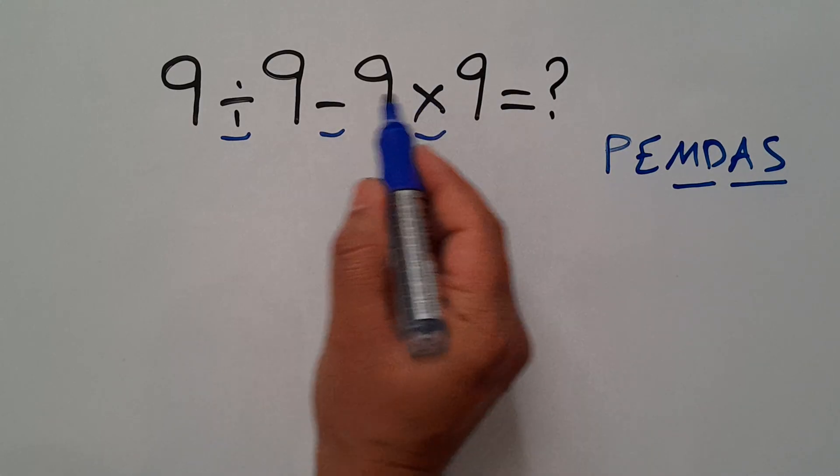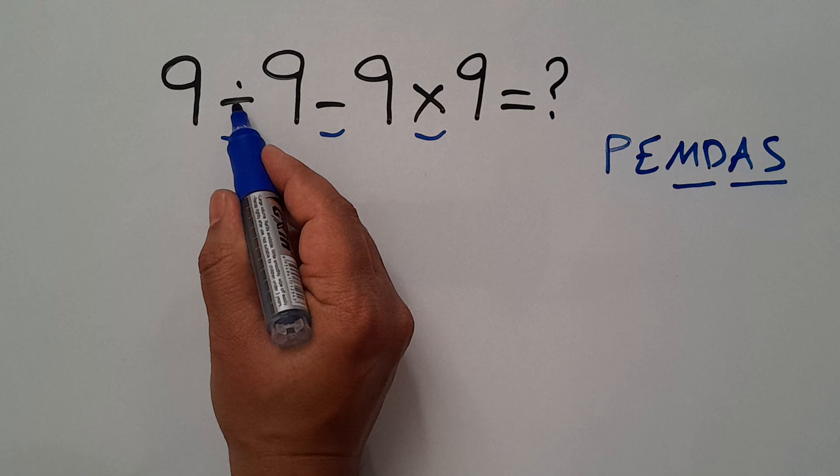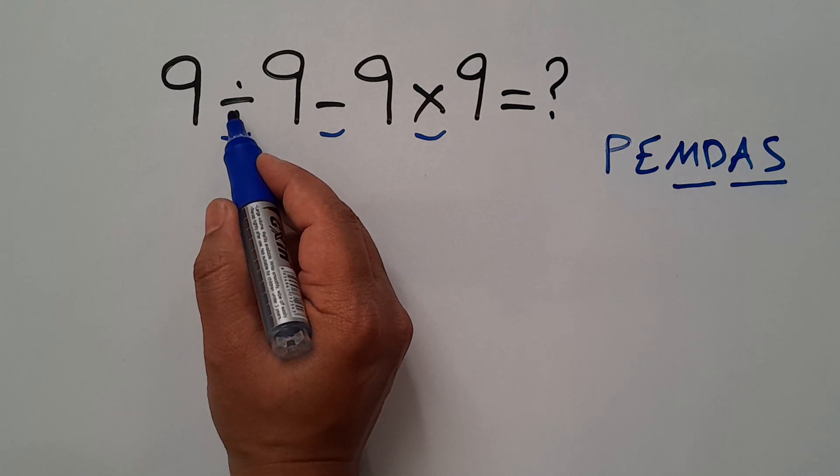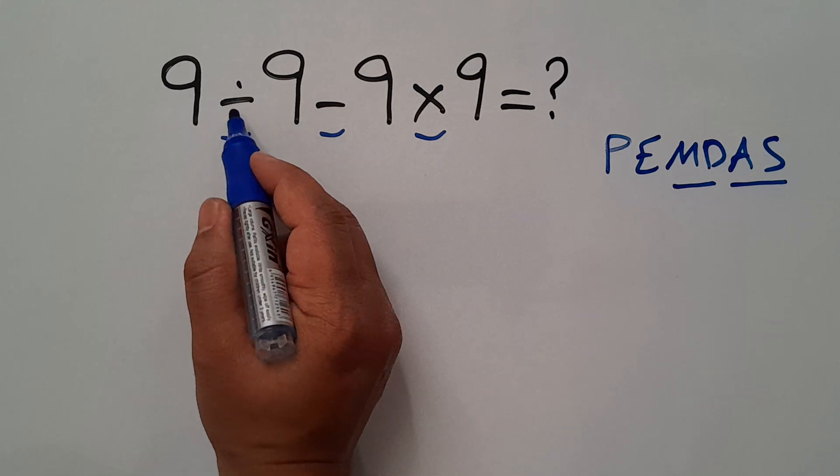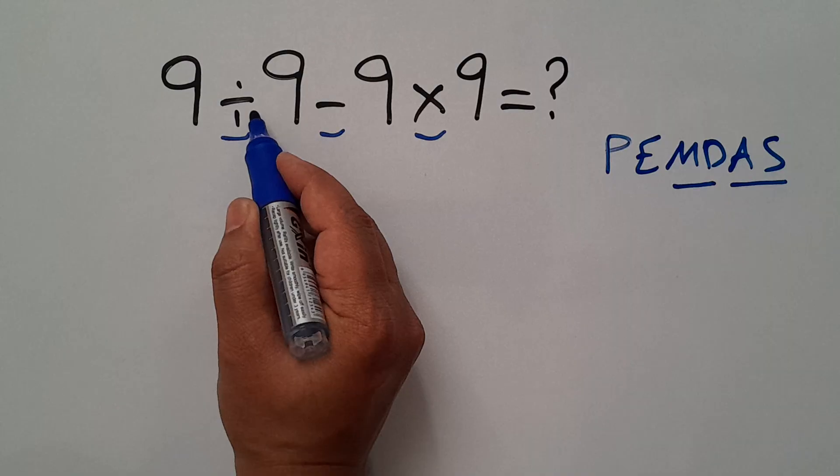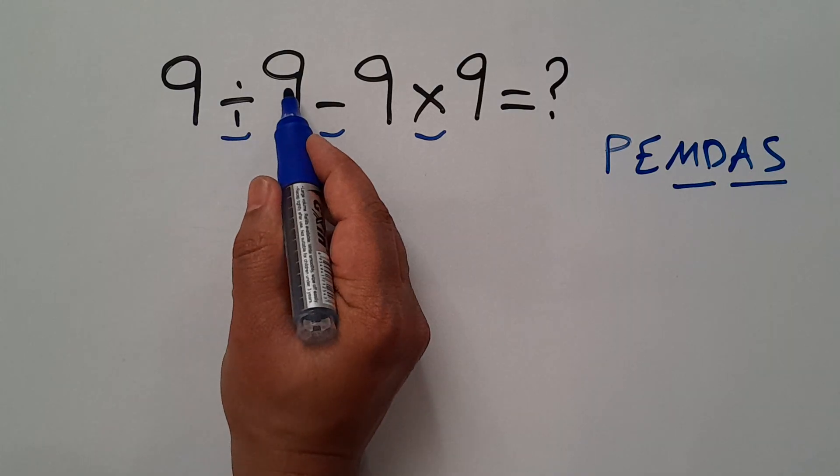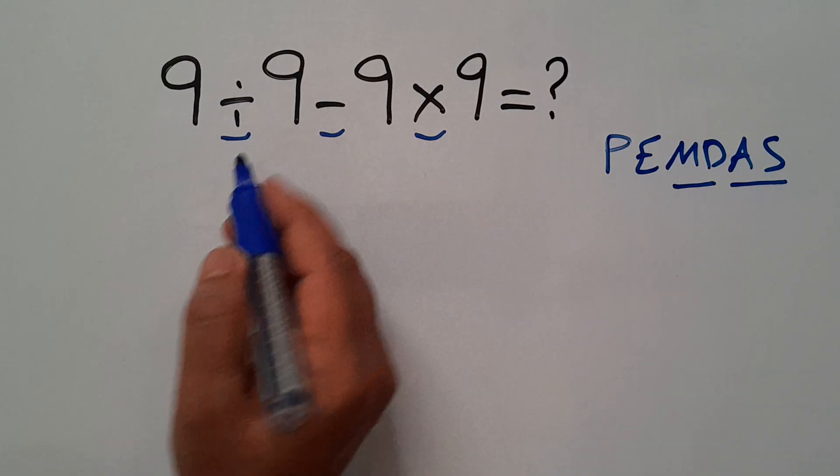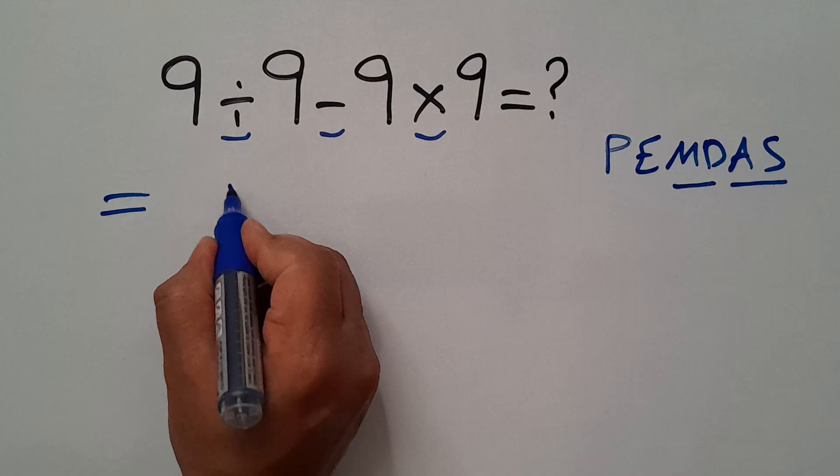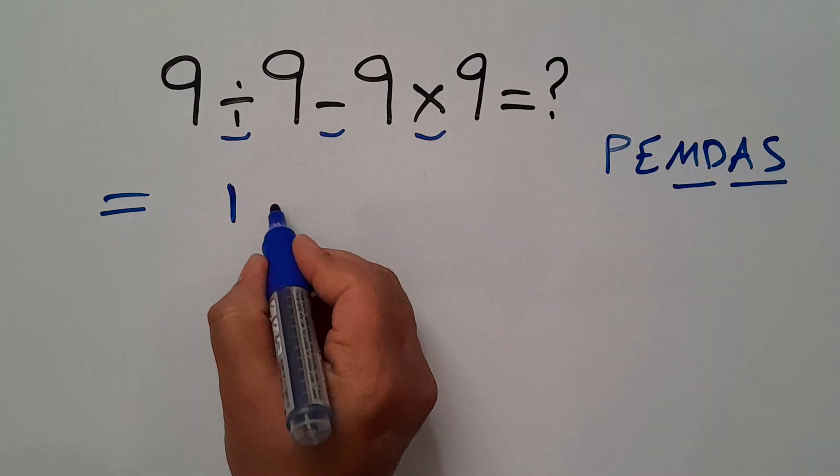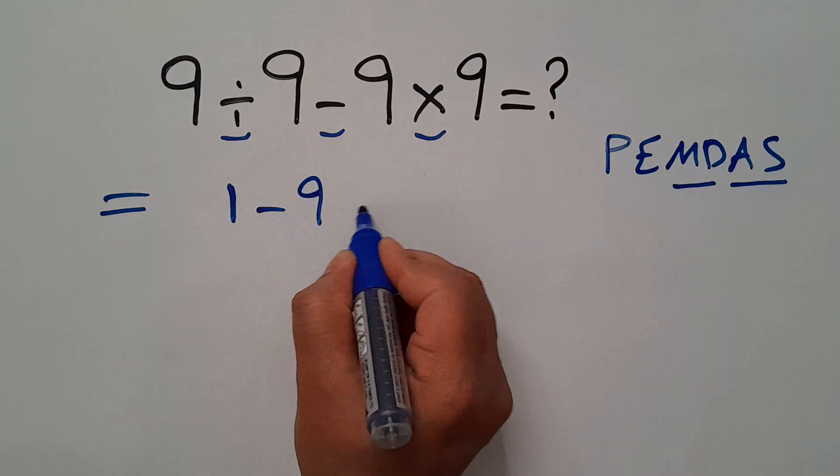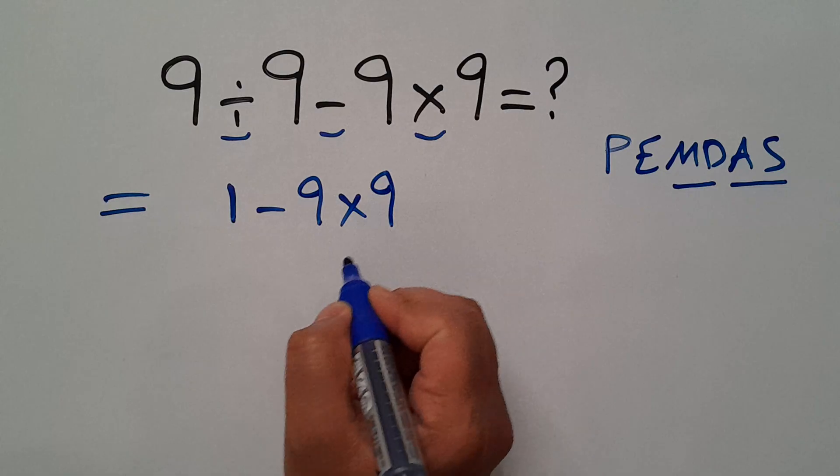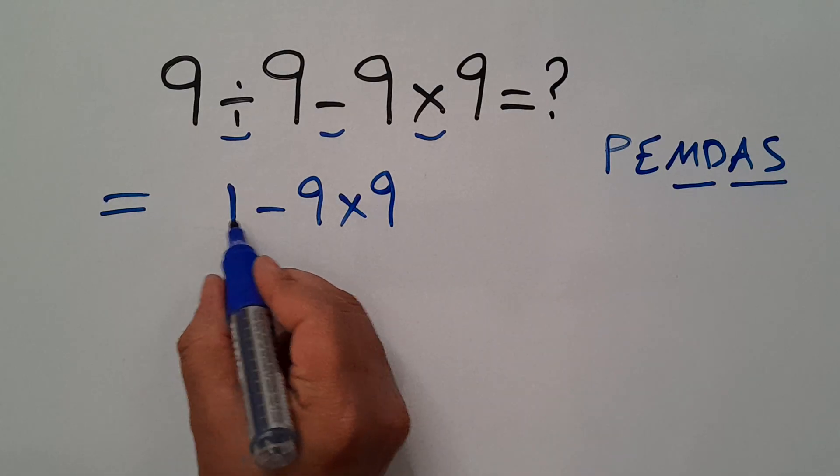So first, this division: 9 divided by 9 gives us 1. So we have 1 minus 9 times 9.